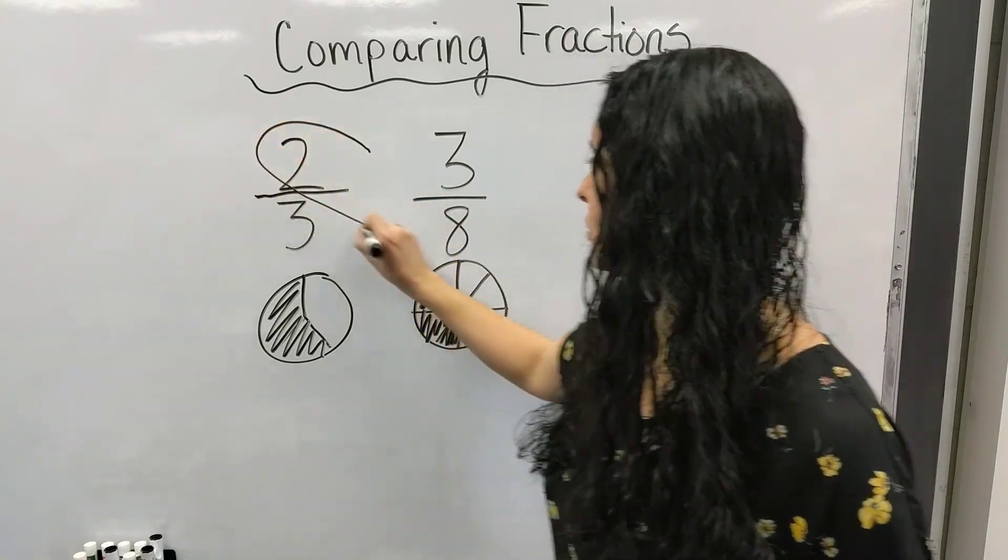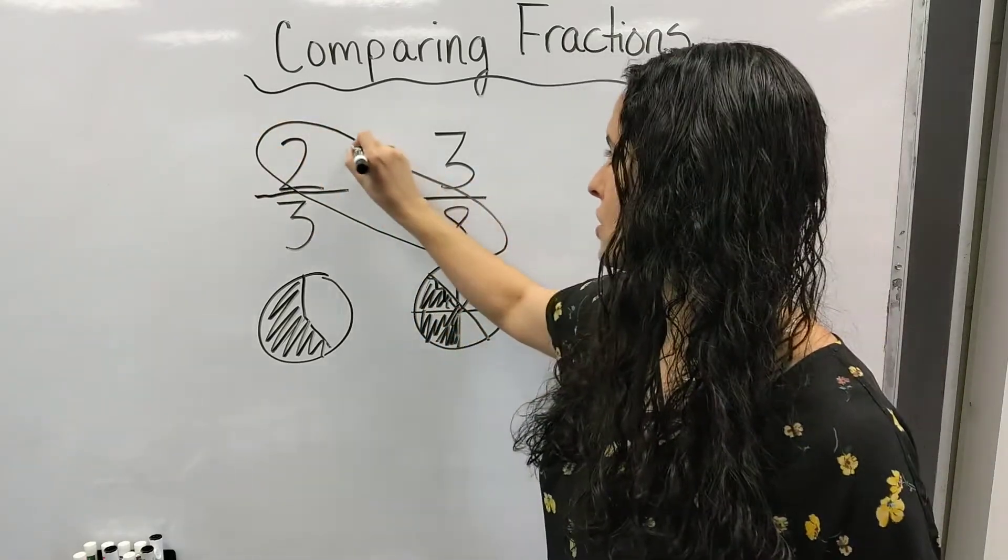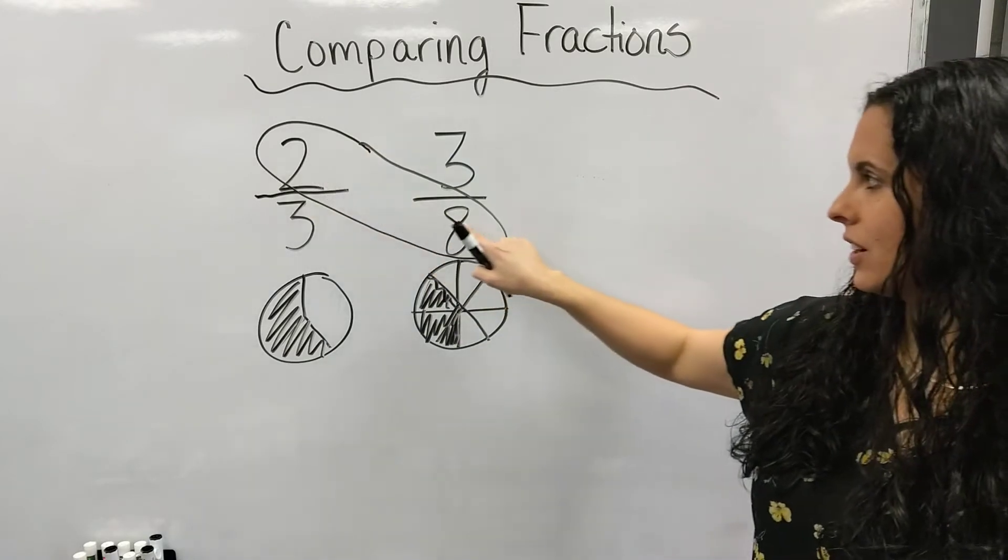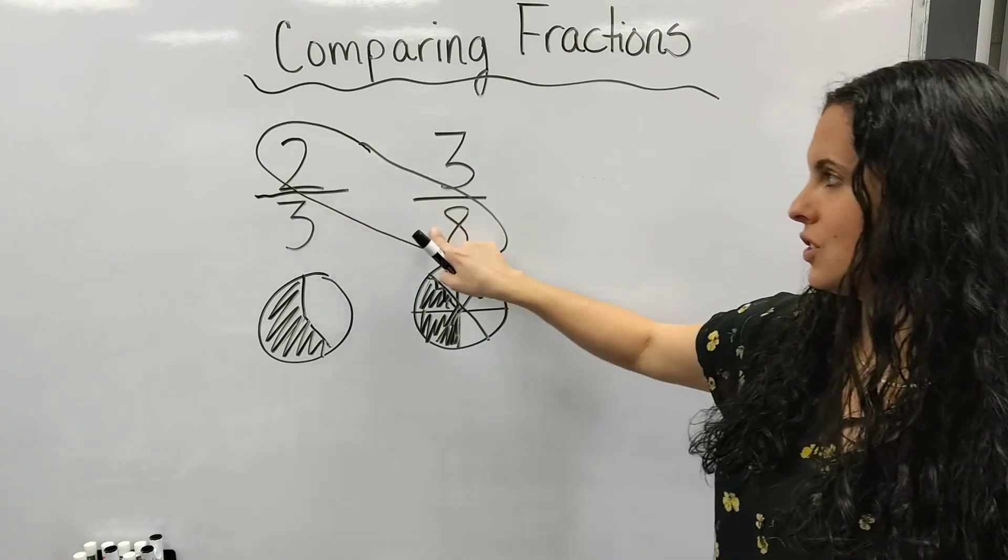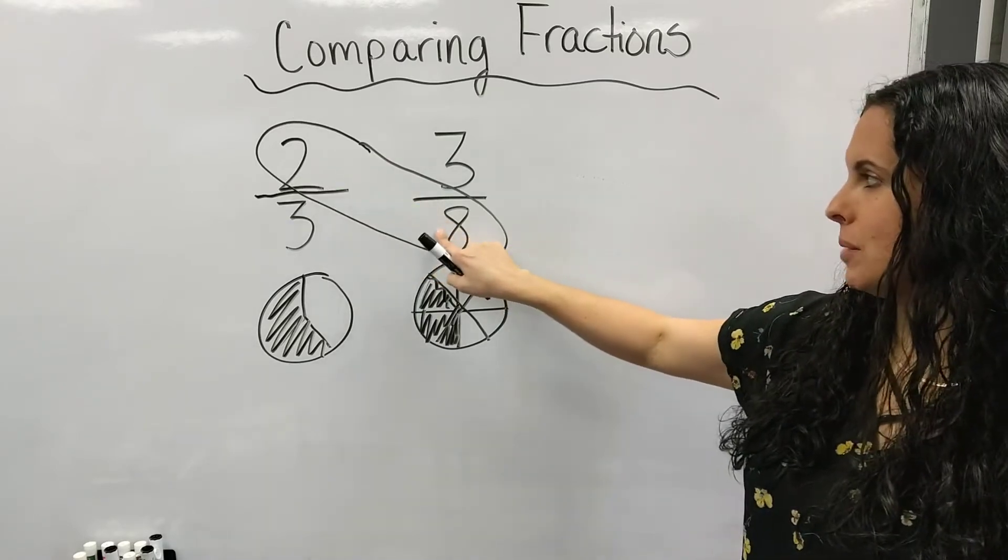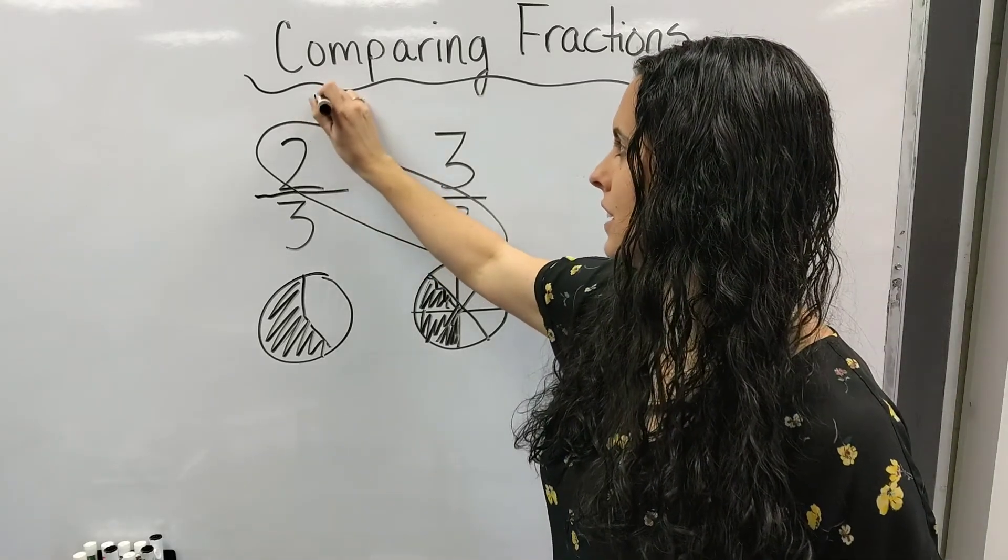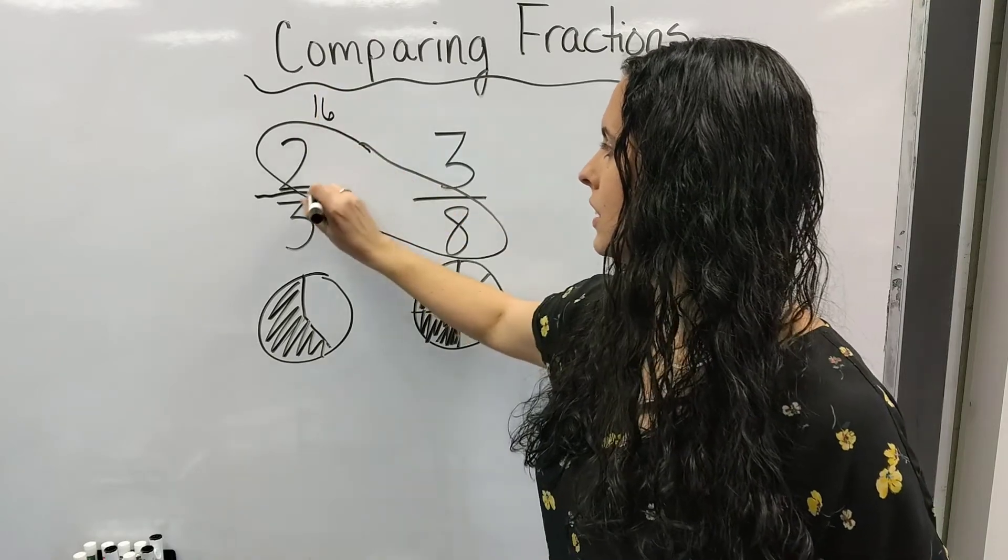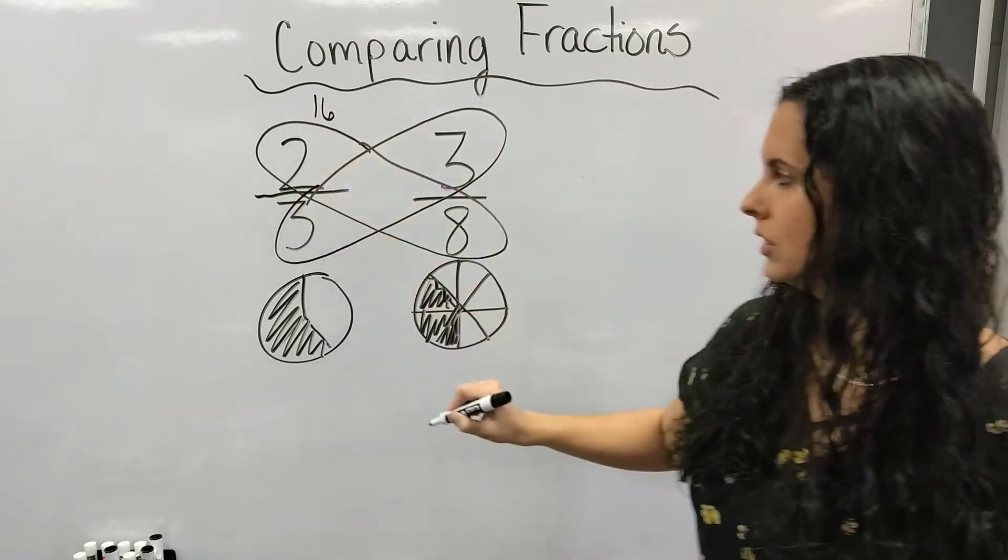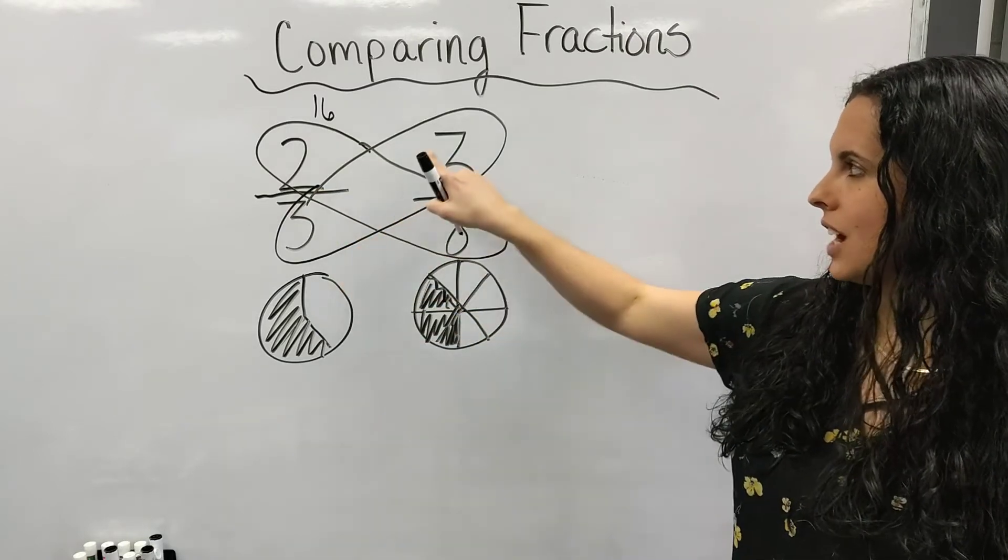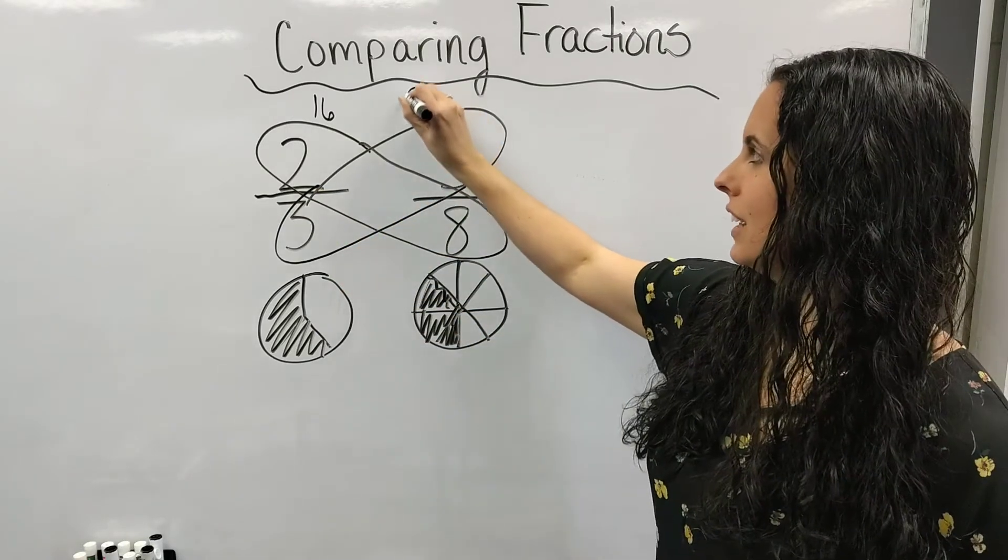I'm going to circle this numerator and this denominator, and I'm going to multiply these two. Two times eight gives me 16. Then I'm going to circle these two, and three times three gives me nine.